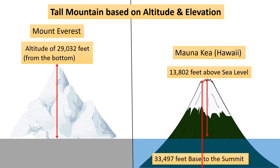In summary, altitude is a broader term that can be used in various contexts, including those beyond the earth's surface. On the other hand, elevation is more specific and is typically associated with the topography of the earth's surface. Both terms, however, are ultimately concerned with vertical distance or height above a reference point.